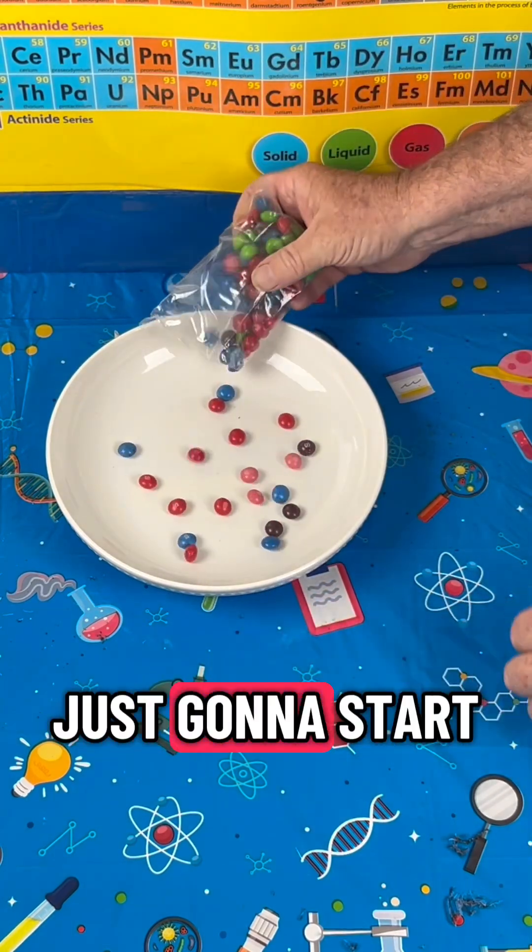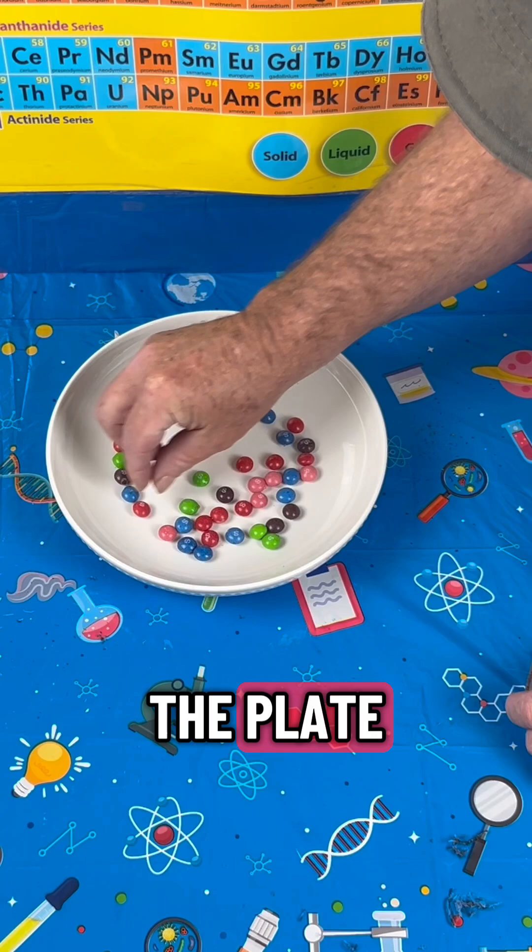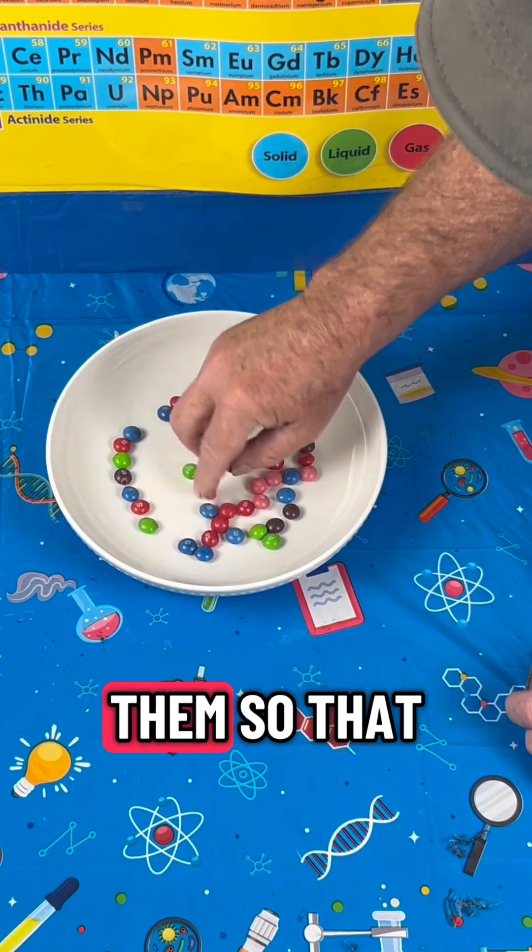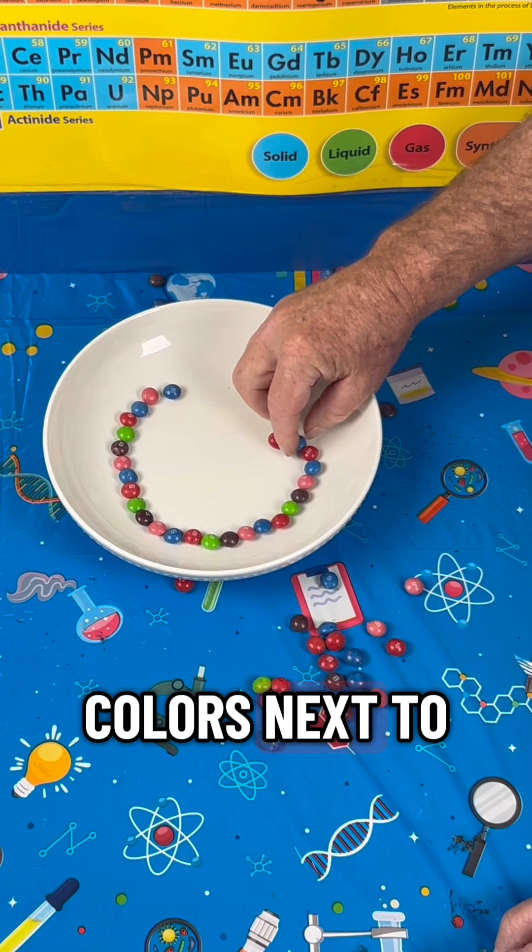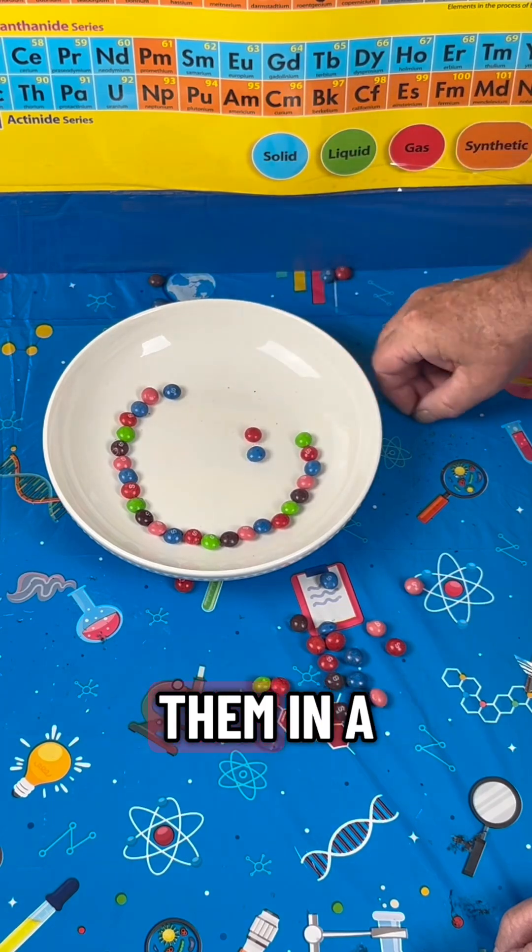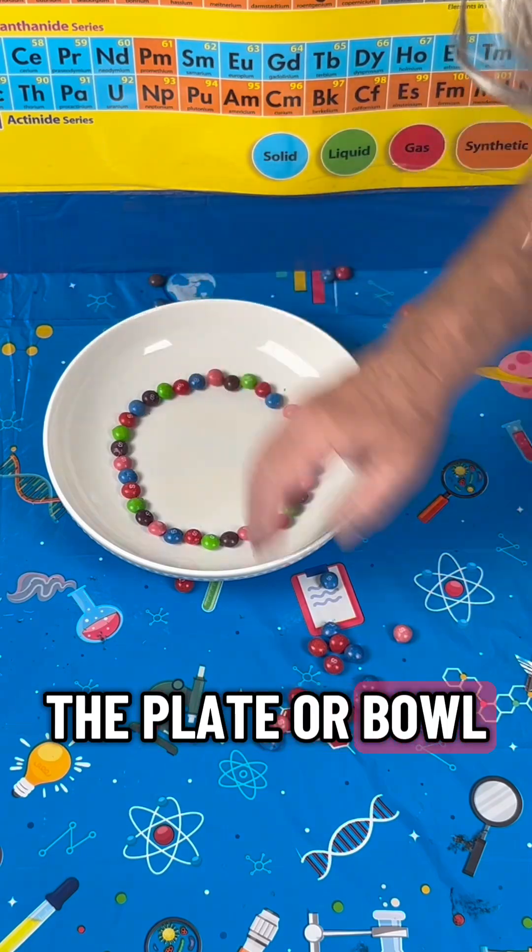You're going to start by pouring the Skittles out on the plate and then organizing them so that there are different colors next to each other. Just put them in a full circle around the plate or bowl.